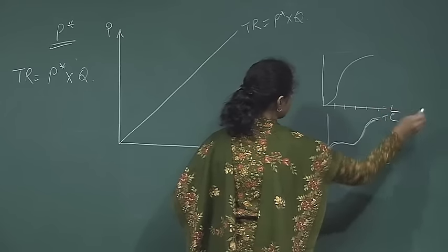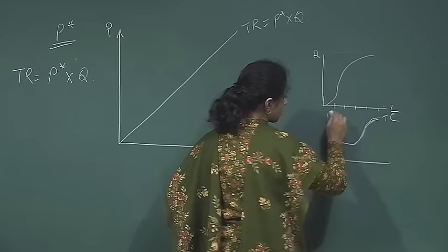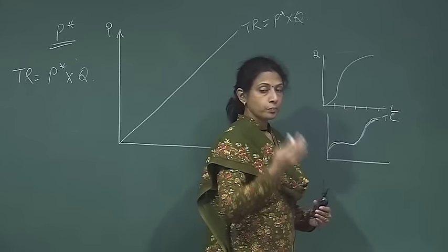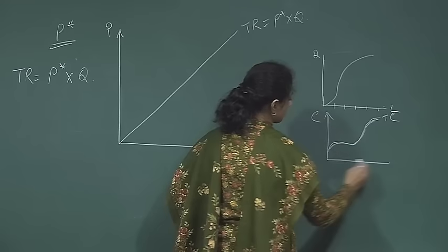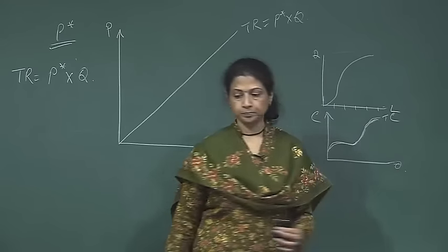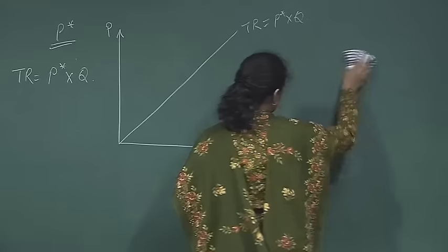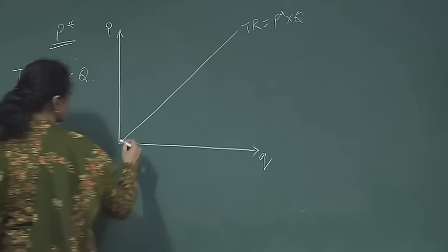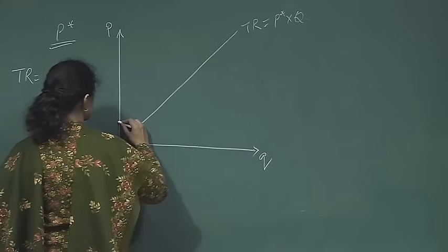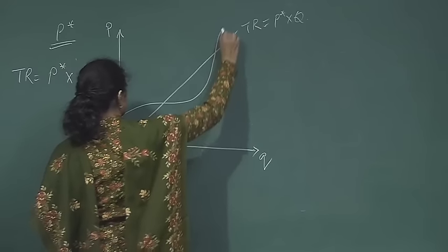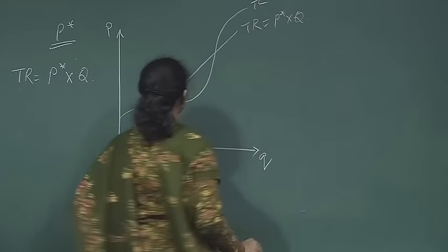We had labor as the variable cost and output Q on the axes. We translated labor into monetary units of wages — the cost — and flipped the curve so we had cost on one axis and output on the other. After including the fixed cost, this is how my total cost curve looked. So this is my cost curve.